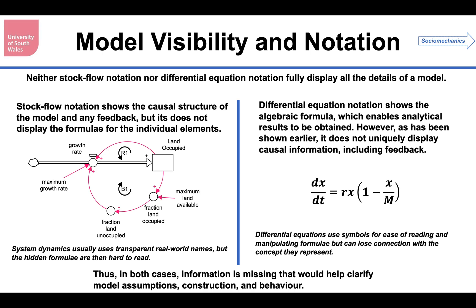This is like a descriptive version of system dynamics, but it hasn't uniquely described the model because all those formulas are very important. But of course, if we'd expressed it as a logistic model using differential equations, apart from not having any of the names, neither would we have had any obvious way of working out the feedback structure. System dynamics usually uses transparent real-world names but hides the formula, but differential equations uses symbols because it makes it easier to read. And I can assure you, I find the maths easier to read in the system dynamics. It's easier to manipulate formally. You can soon find the equilibrium points of this and show one's stable, one's unstable. But of course, it loses any connection with the concepts they represent, and of course, the assumptions that we use to construct the model.